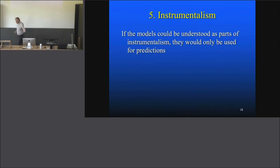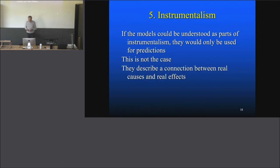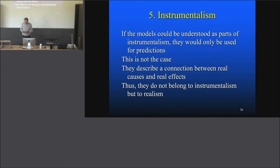One point of view is that models in economics are used as instruments, and you're only interested in their predictive power and nothing else. But this is simply not the case. If you read the papers, they are not just used for predictions — they describe a connection between real causes and real effects. In the paper on segregation, it's weak racial preferences, and they have an effect on how some American cities are built, with strong segregation. So this is not just an instrument for predictions — it's real causes and real effects.